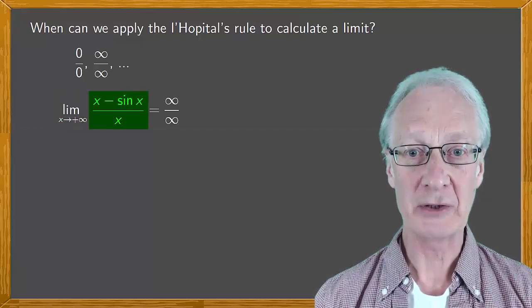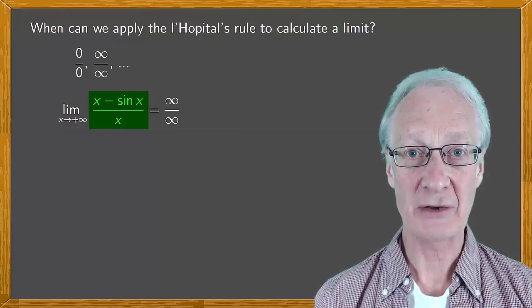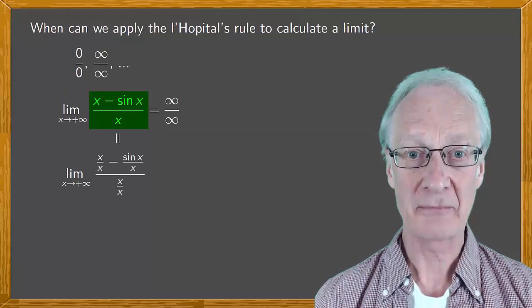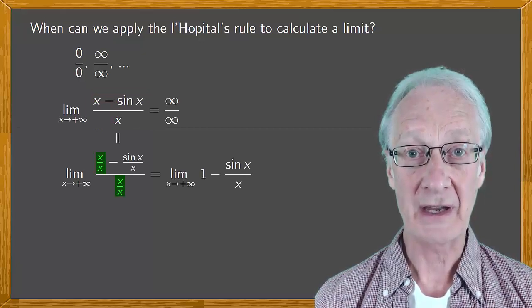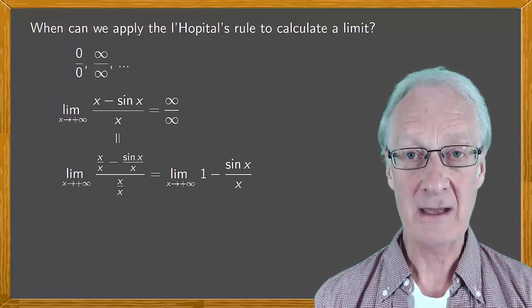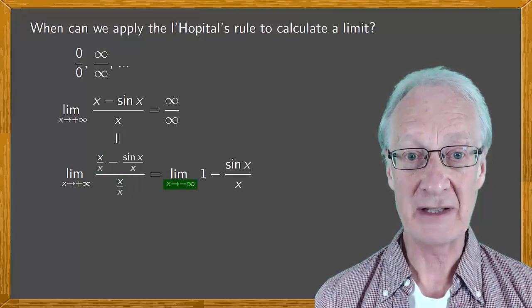First, we divide the top and bottom of (x - sin x)/x by x, which simplifies to 1 - sin x/x. As x tends to plus infinity,